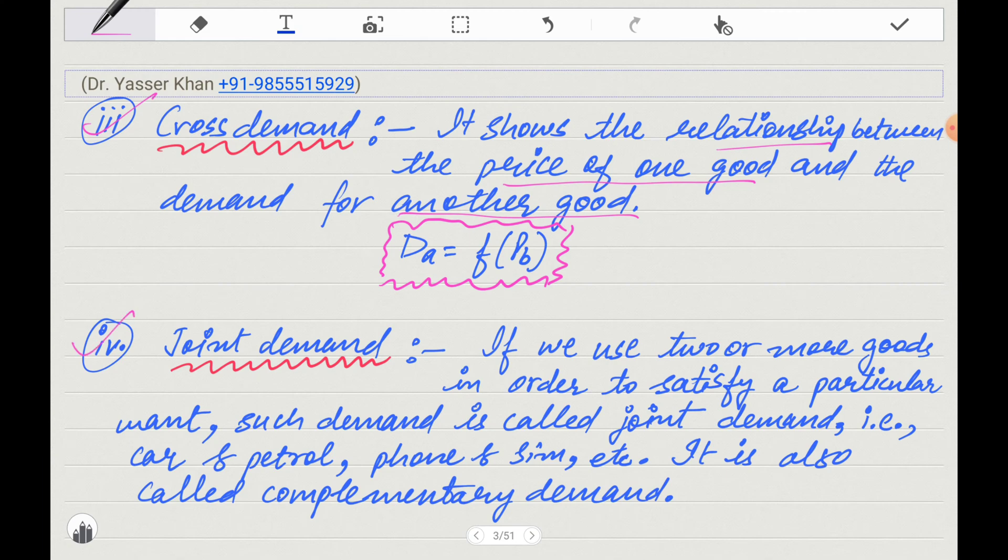Next comes joint demand. When we use two or more goods in order to satisfy a particular demand, we call it joint demand. Simple examples: car and petrol, phone and sim. When you use two things together, your demand will be satisfied. These are complementary goods.